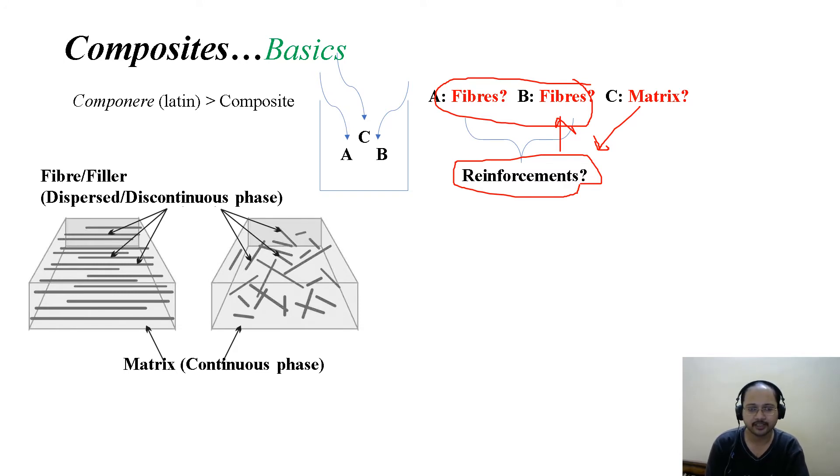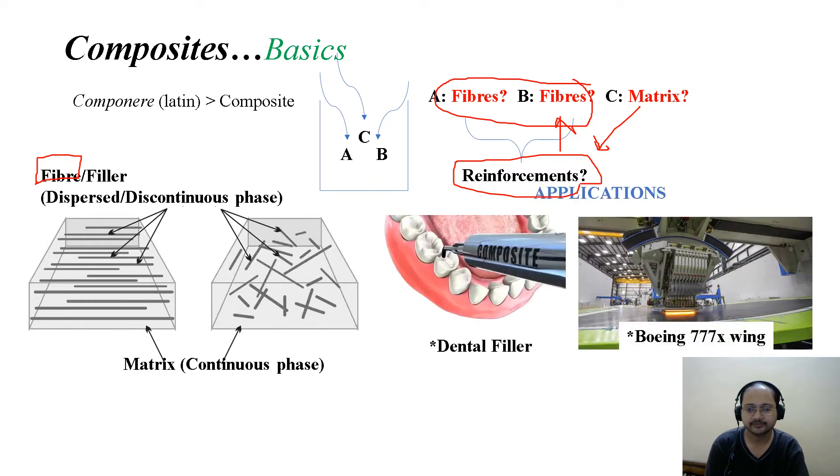They can be either continuous, like what we call fibers, which are long cylindrical strands, or they can be dispersed as fillers—maybe short fibers or just ground fiber powders. So either in a continuous phase or in a discontinuous phase.